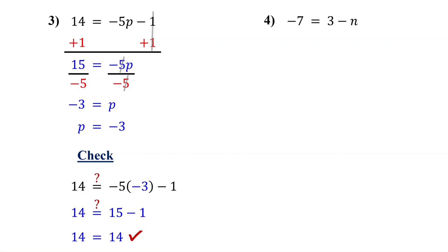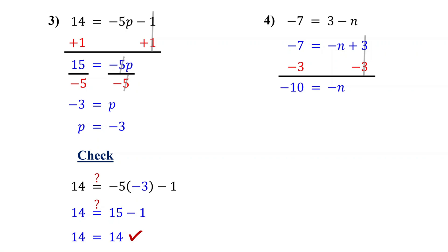You might notice that the variable is not first, but that's totally fine. 3 minus n is the same as negative n plus 3, just written in a different order. Now you can clearly see that 3 is being added to negative n. So first, isolate negative n by subtracting 3 from both sides. On the right, the 3s cancel out, leaving negative n. On the left, negative 7 minus 3 is negative 10. When there is a negative sign in front of a variable, it means the variable is being multiplied by negative 1. Here, negative n is the same as negative 1 times n. So to get n by itself, divide both sides by negative 1.